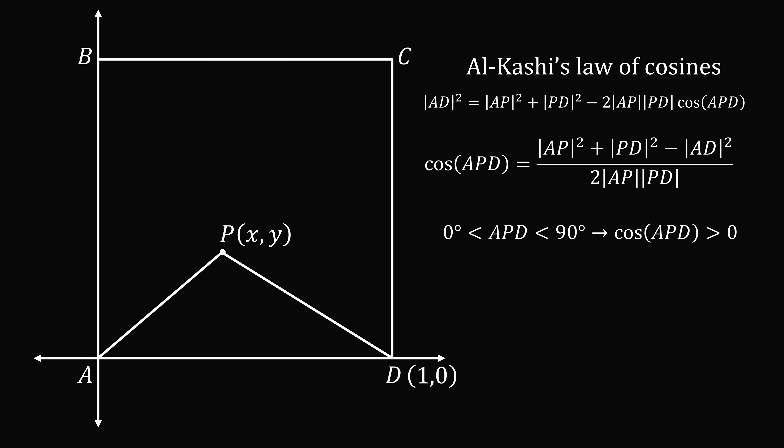Now, if the angle is between 0 degrees and 90 degrees, the cosine of the angle will be positive. If the angle is exactly equal to 90 degrees, the cosine of the angle will be equal to 0. And if we have an obtuse angle between 90 degrees and 180 degrees, the cosine of the angle will be less than 0.